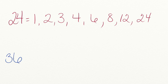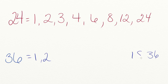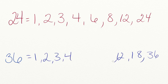Now we have to list all of our factors for the number 36. We have 1 and 36, 2 and 18, 3 and 12, 4 and 9. We can't multiply anything by 5. But we can multiply 6 times 6. And we now have all of our factors listed.